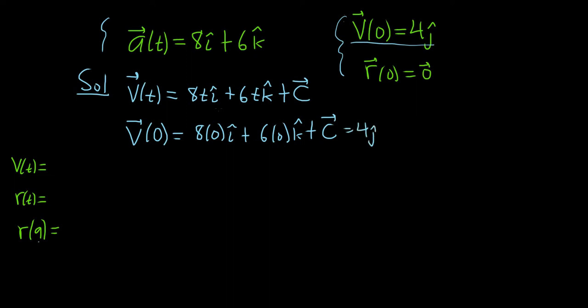Just plugging in 0 for all of the t's here, and we set it equal to 4j. So all of this goes away, it's all 0. So you just get C equals 4j.